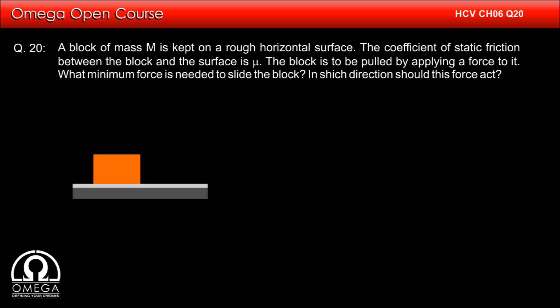A block of mass m is kept on a rough horizontal surface. The coefficient of static friction between the block and the surface is mu. The block is to be pulled by applying a force to it. What minimum force is needed to slide the block? In which direction should this force act?